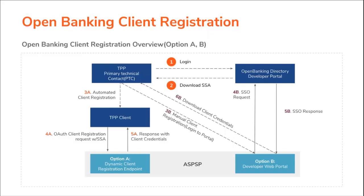According to the specification, an ASPSP can allow a TPP to register using either the Dynamic Client Registration endpoint or manually through login to their developer web portal. For either case, before registering, TPPs have to login to the Open Banking Directory developer portal and download a software statement assertion. I will be discussing both mechanisms separately in this webinar.